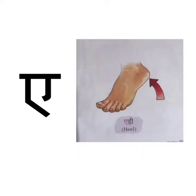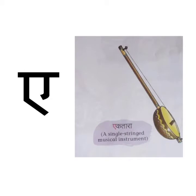A say edi — edi means heel. Heel is the back part of our foot. A say ek tara — ek tara is a one-stringed musical instrument used in traditional music.